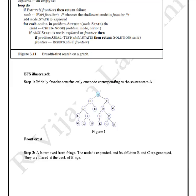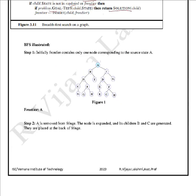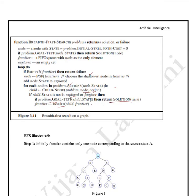Here is an example to understand breadth first search. If the frontier is empty, it returns failure. Otherwise, node = pop frontier — choose the shallowest node in the frontier. For each action in the problem, generate a child node. If the child's state has not been expanded or is not already in the frontier, perform the goal test. If it is the goal, return the solution; otherwise insert the child into the frontier.